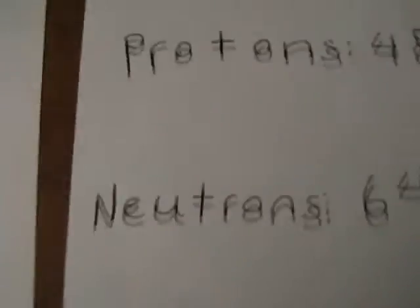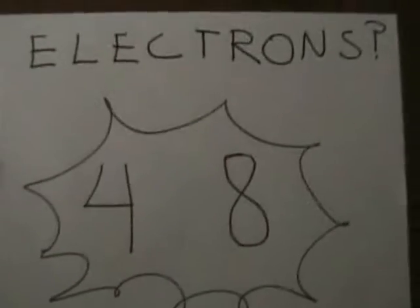Quick review! Cadmium is a period 5 element, protons 48, neutrons 64, and electrons 48! And let me say it again — it's a transition metal!